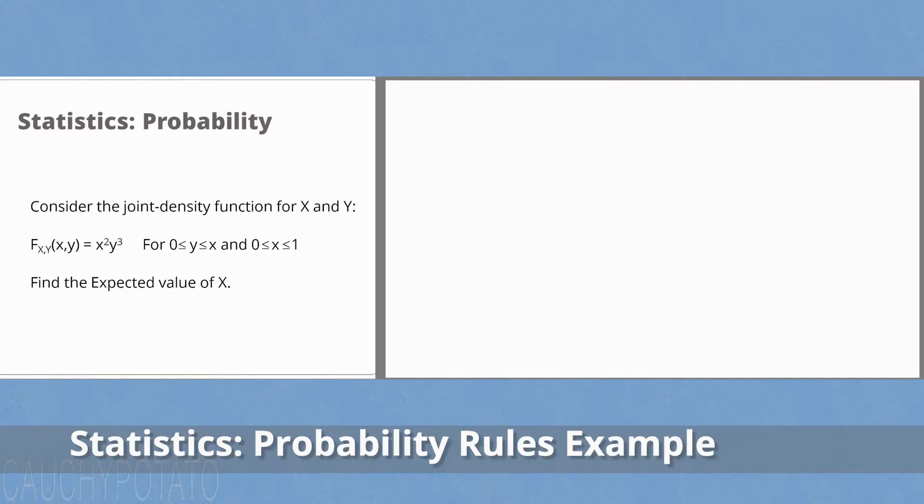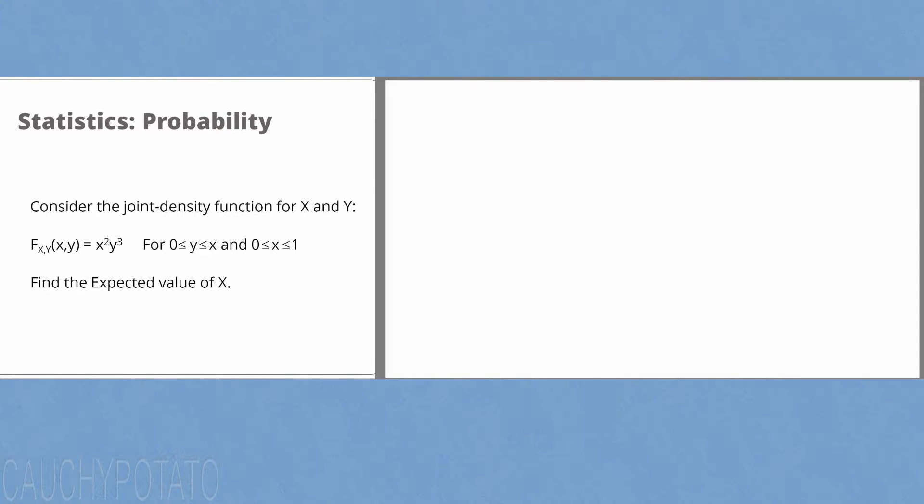Consider a joint density function for x and y: f(x,y) equals x squared times y to the third, for 0 less than or equal to y less than or equal to x, and 0 less than or equal to x less than or equal to 1. Find the expected value of x.